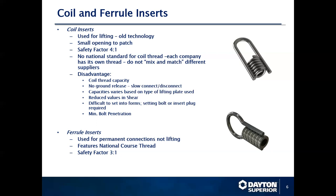Disadvantages of coil thread: capacity is severely limited. There is no ground release, so anytime you have anything up high or around a corner, you are going to have to climb a ladder to release it while it is still being erected. Capacity also varies with the type of lifting plate — a strong insert can have its capacity reduced by the accessory components within the system.